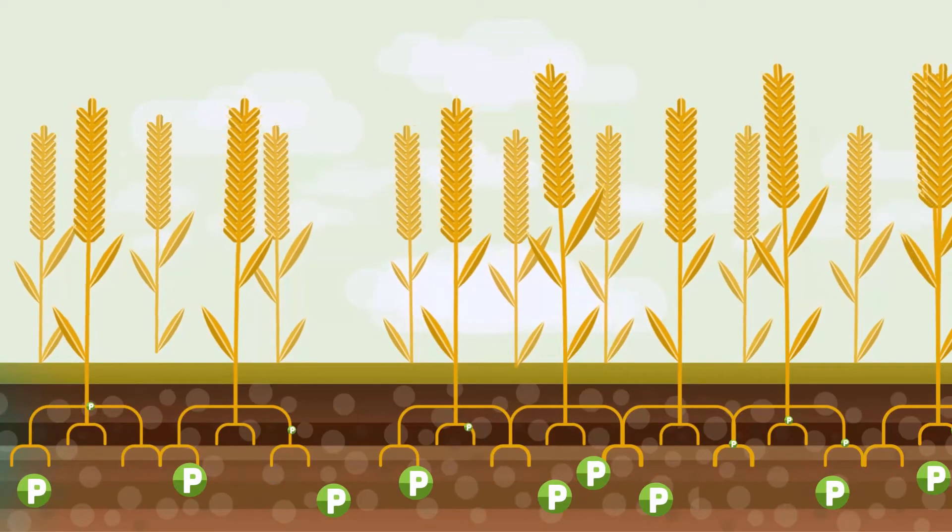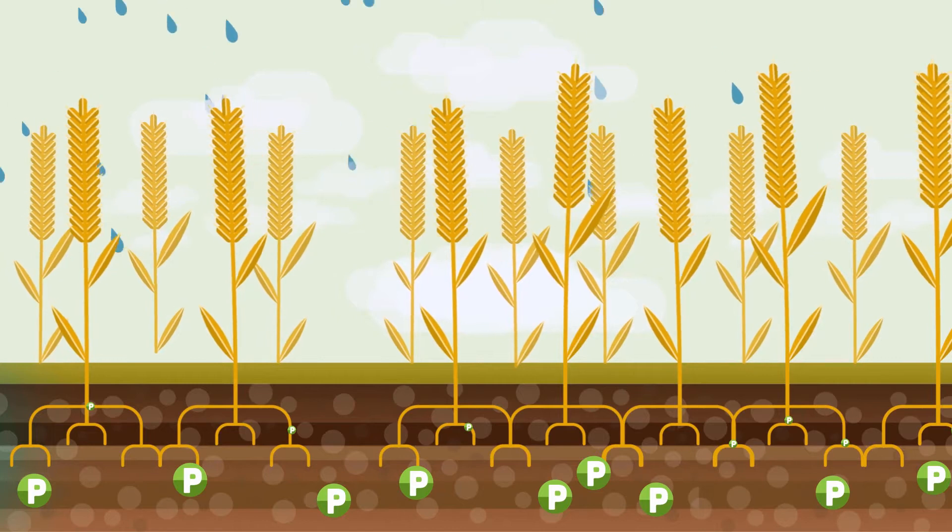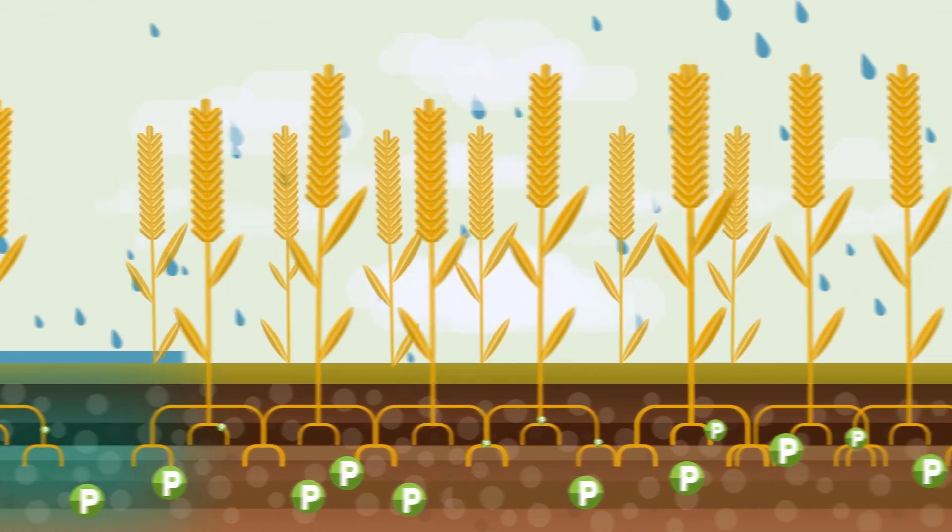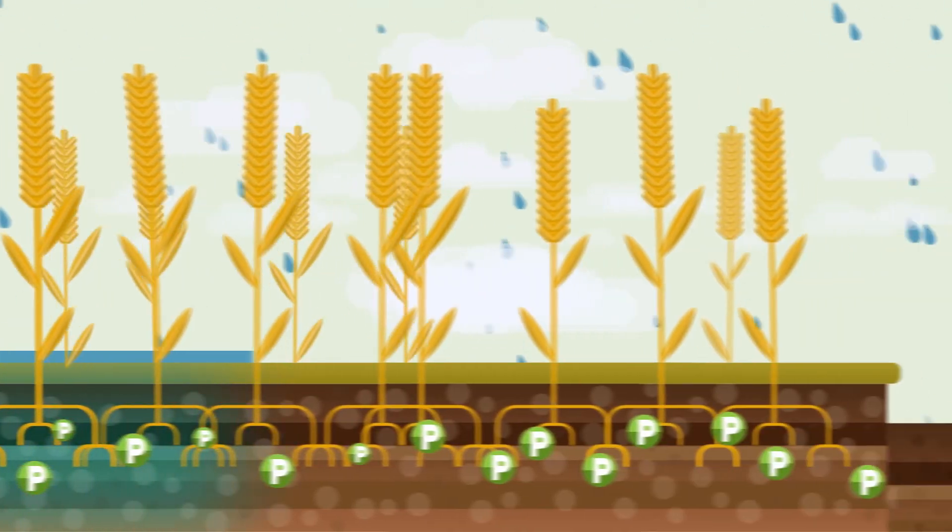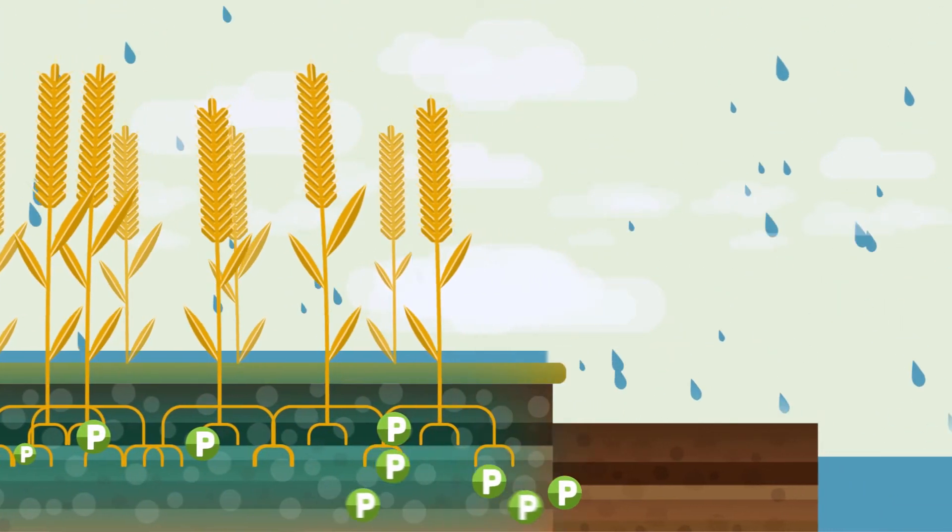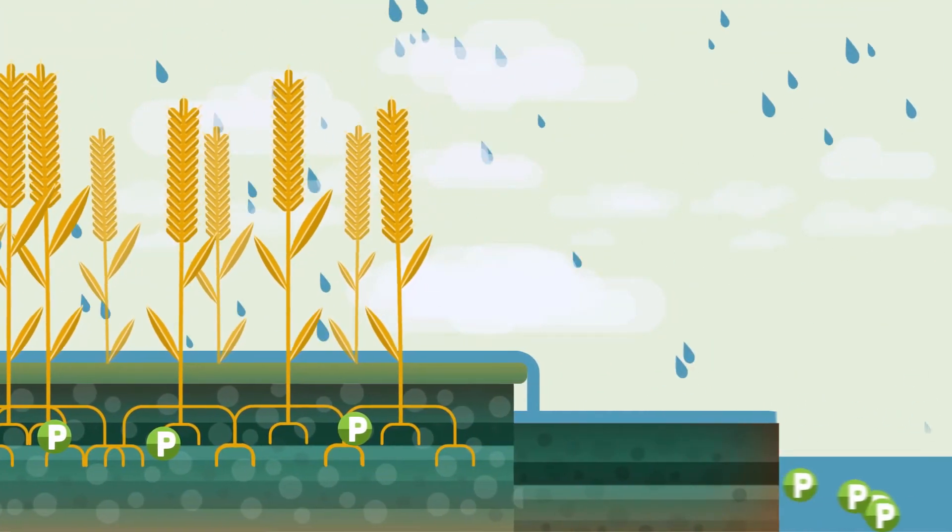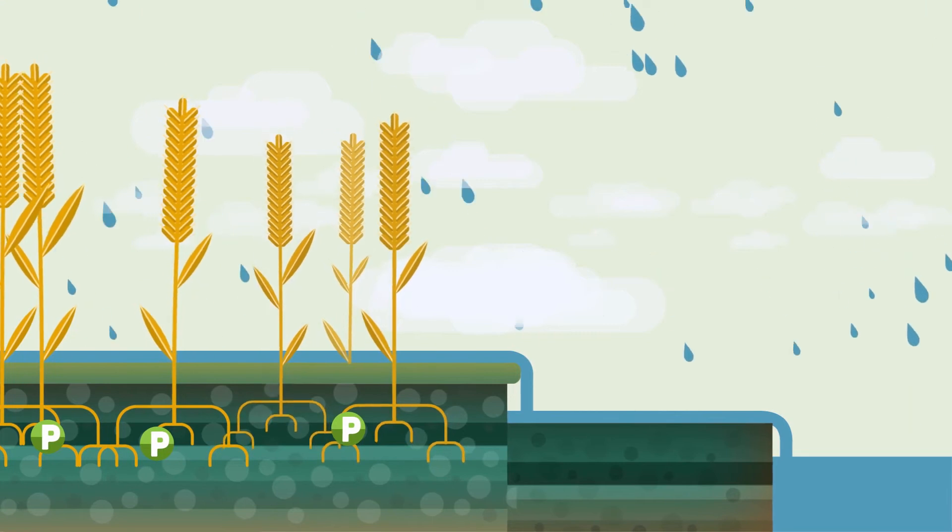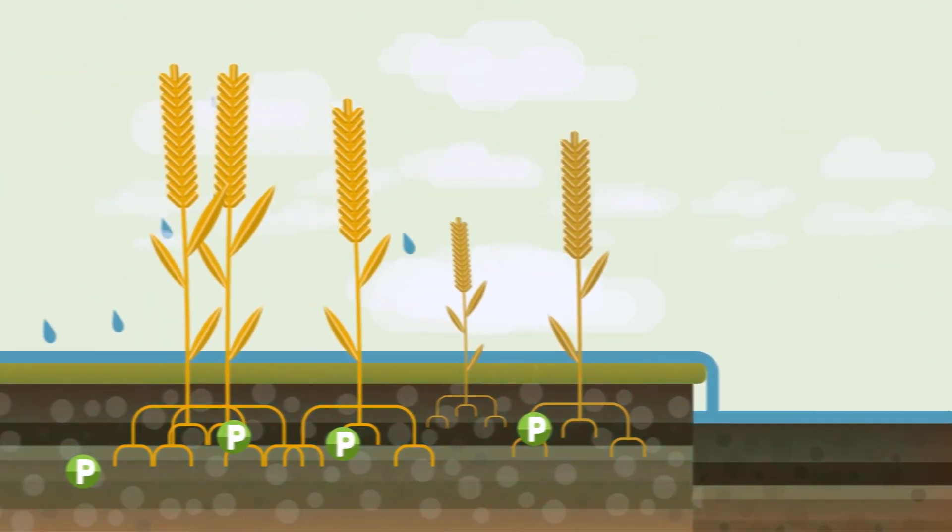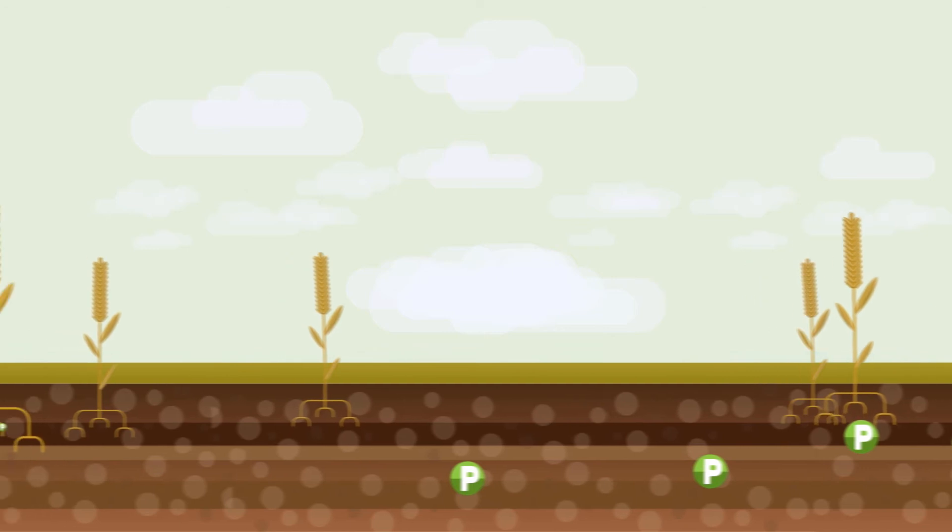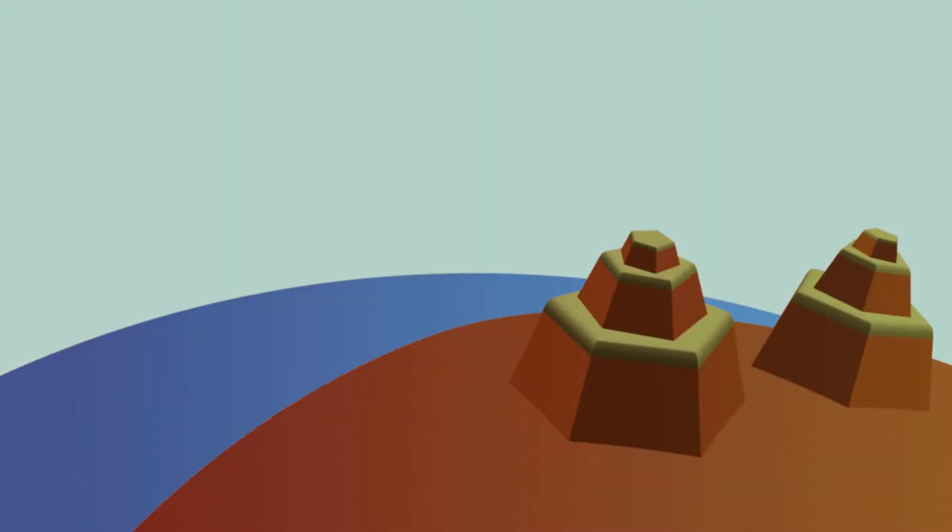Most of the phosphate is being assimilated by plants, so impoverishing the soil. The remaining phosphate is being washed away by rain into rivers, and finally into seas and oceans. This shortage of phosphate is now creating difficulties in feeding the 7 billion people on earth.